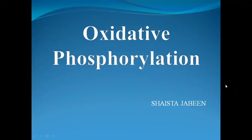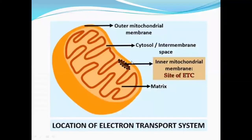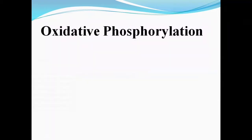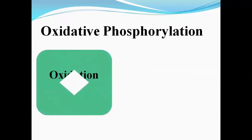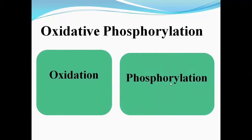Today you are going to learn about oxidative phosphorylation. This process takes place inside the inner mitochondrial membrane because the components responsible for oxidative phosphorylation are located there. Oxidative phosphorylation is the combination of two mechanisms: the first is oxidation, in which energy is released, and the second is phosphorylation, in which the energy released by oxidation is captured and utilized.